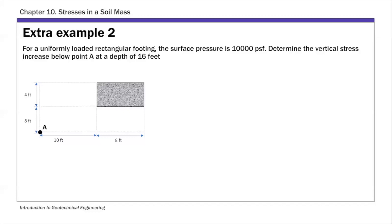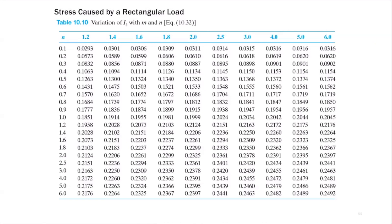First, let's look at the problem statement. We're given the dimension of this rectangular footing, which is 4 by 8 feet, and the location of point A is also given. The surface pressure, we call this small q, is 10,000 PSF, and the depth of point A, we use small z, is 16 feet. The solution for the vertical stress increase is expressed as surface pressure q times an influence factor I3, which is a function of the geometry of the footing, and the relationship between I3 and the geometry is given in table 10.10. To use table 10.10, we need to make sure that point A is directly below the corner of the rectangular area.